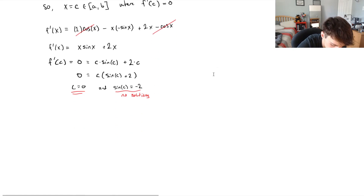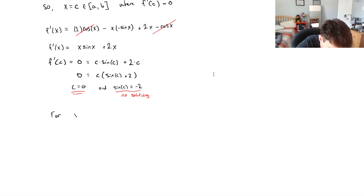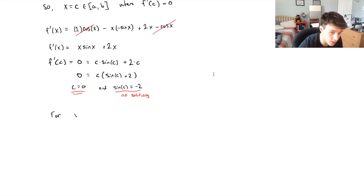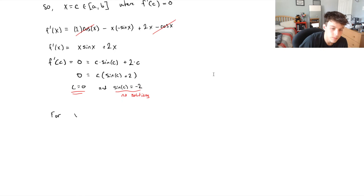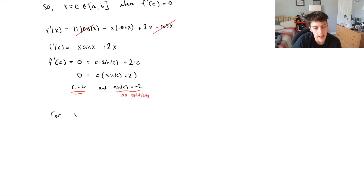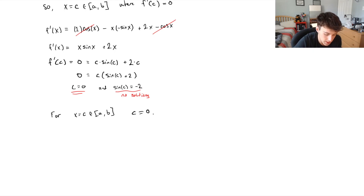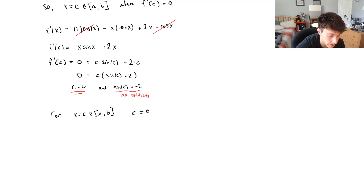Let's write that down to remind ourselves: for x = c, which is between a and b — remember, a and b are the roots we assumed were true — c has to equal zero. Now let's take a look at the roots of f(x) and see if that contradicts what we found must be true by Rolle's Theorem.